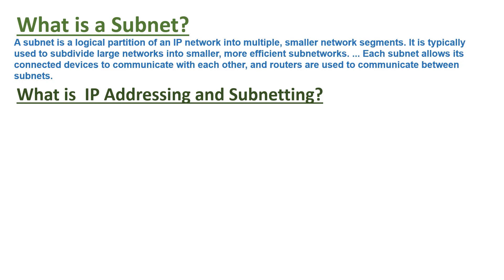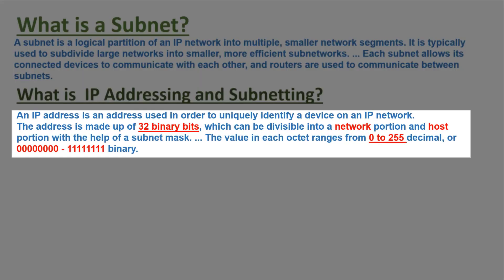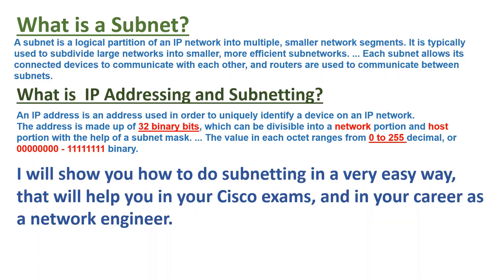What is IP addressing and subnetting? An IP address is an address used in order to uniquely identify a device on an IP network. The address is made of 32 bits, which can be divided into a network portion and host portion with the help of a subnet mask. The value in each octet ranges from 0 to 255 decimal, or zeros to ones in binary. I will show you how to do subnetting in a very easy way that will help you in your Cisco exams and in your career as a network engineer.